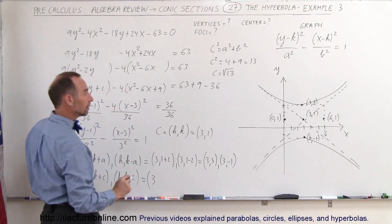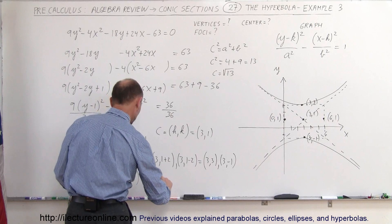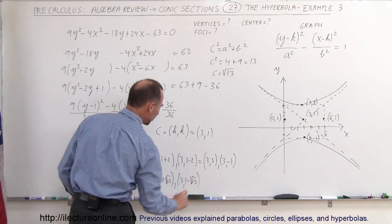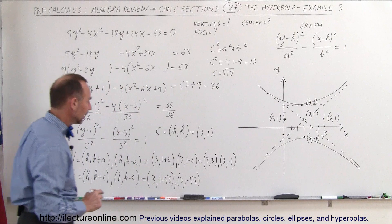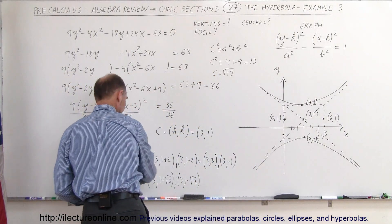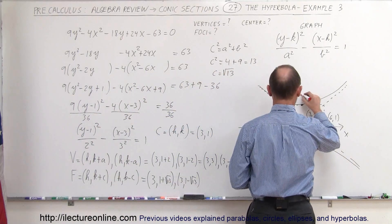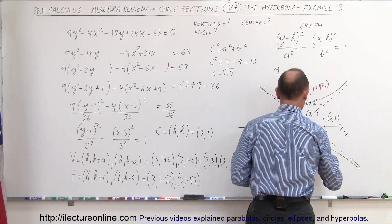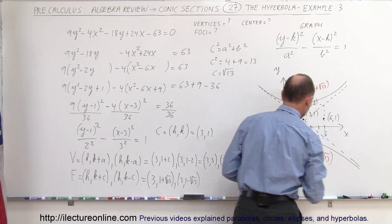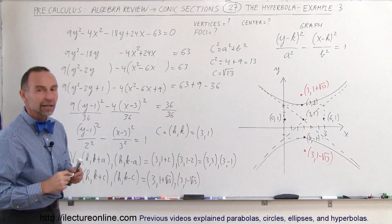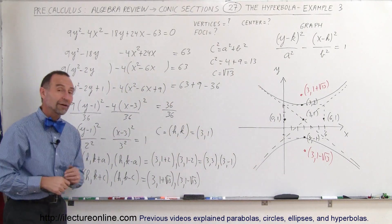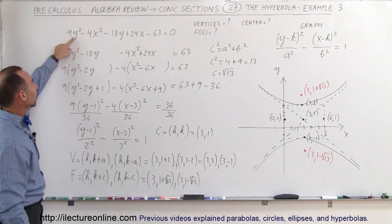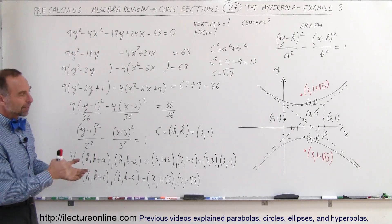In this case, h is 3 and k is 1, so the two foci are at (3, 1 plus the square root of 13) and (3, 1 minus the square root of 13). Note that the square root of 13 is between 3 and 4. Those are the two foci of the hyperbola. That's how we graph a hyperbola that opens up and down, with the vertical transverse axis, when the y term comes first and is positive and the x term comes second and is negative.